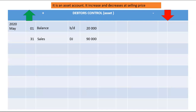These are random amounts I'm just coming up with in order for us to thoroughly go through this debtors control account. And then you will have a debtors control total in your CPJ.